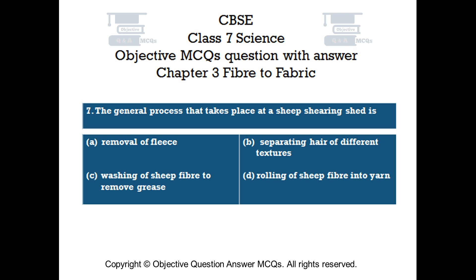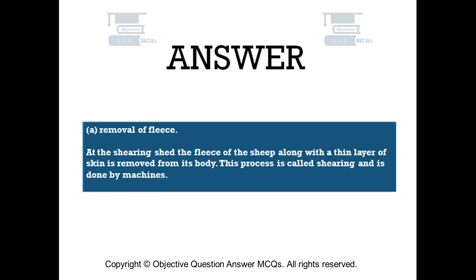The right answer is Option A — Removal of fleas. At the shearing shed, the fleece of the sheep along with a thin layer of skin is removed from its body. This process is called shearing and is done by machines.